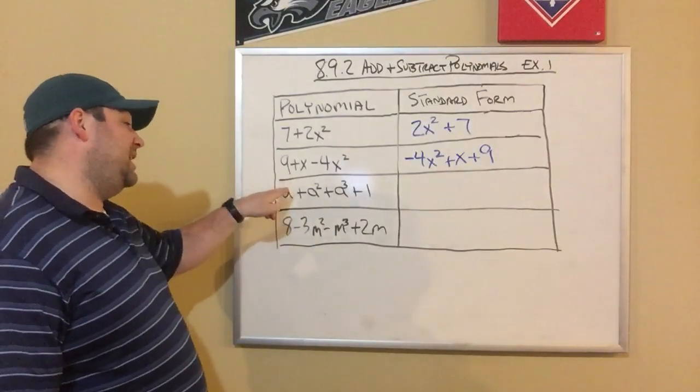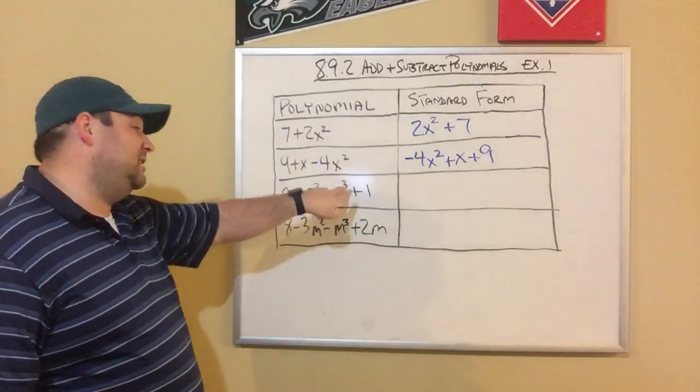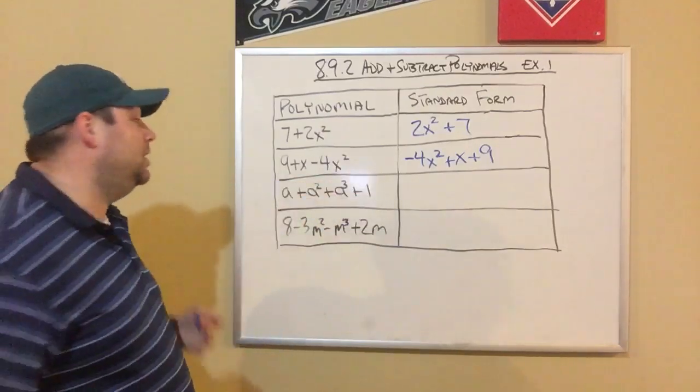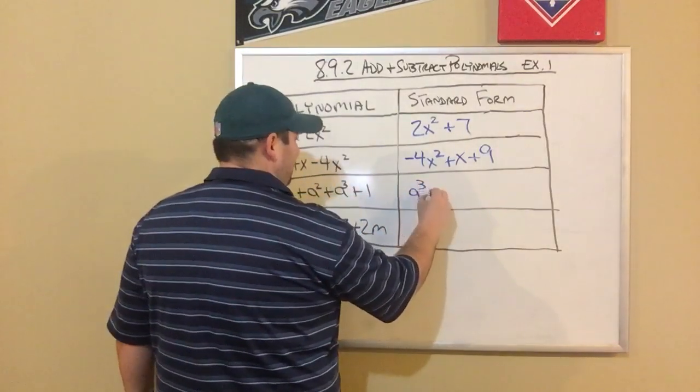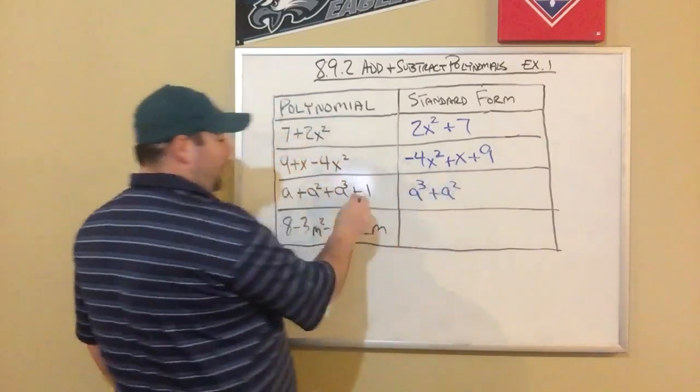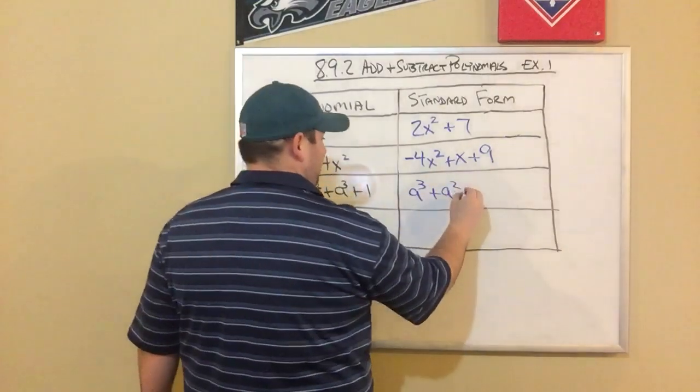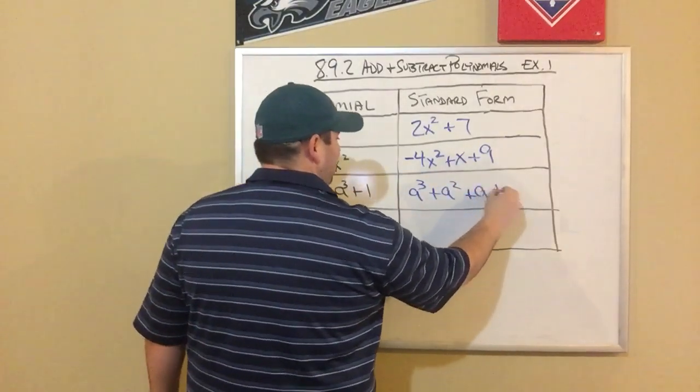Let's look at our next one. We can see we've got a to the first, a to the second, a to the third, and just a 1 with no variable. So to put these in order, first would be a to the third, then a squared. These are all pluses. Everything's positive, so I know it's going to be pluses. Plus a, plus 1.